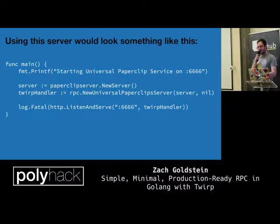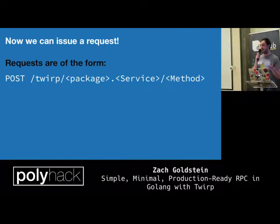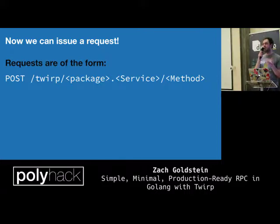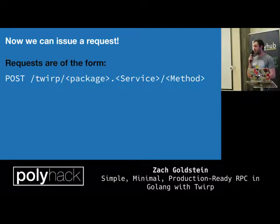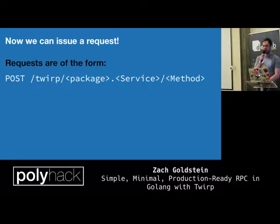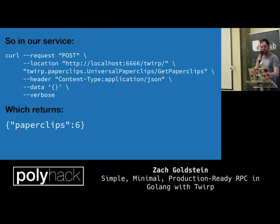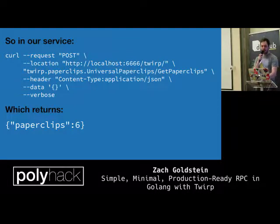When issuing requests, with REST you have to worry about GET, POST, PUT, PATCH, and all the different HTTP methods. With Twirp, it's all POST — even if it's a get operation, it's all POST. You don't have to think about it. Here's a sample curl request: you can see the URL using the specified format, the JSON content-type header, and we're requesting paperclips. Pretty easy to interact with.